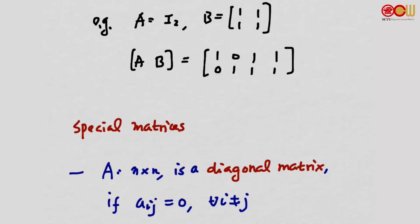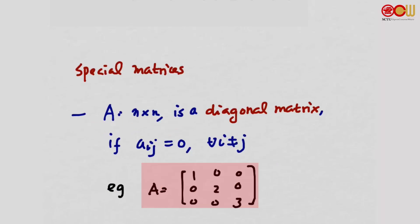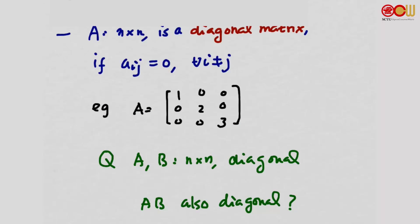Now let's talk about two special matrices. First, suppose A is a square matrix M by N. We say it's a diagonal matrix if all the off-diagonal entries A_{ij} for i not equal to j are equal to zero — only the diagonal entries may be non-zero. A question: suppose both A and B are M by N diagonal matrices. Does that mean the matrix product AB is also a diagonal matrix? We leave this as an exercise.